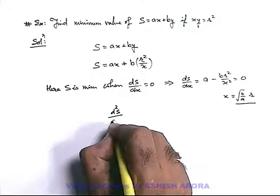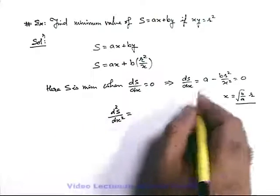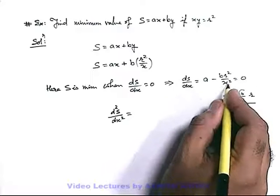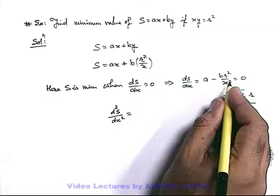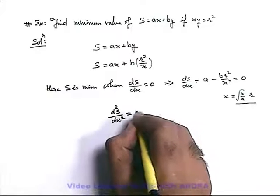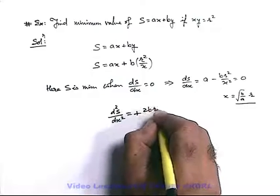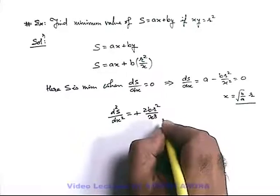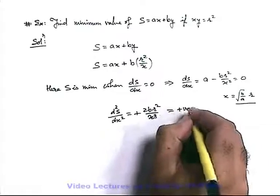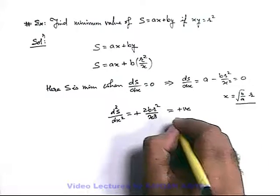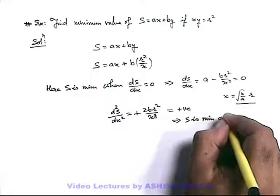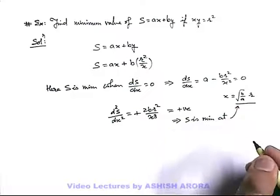The second derivative d²s by dx² is computed: the differentiation of a is zero, and 1 by x squared differentiates as minus 2 by x cubed, so this becomes plus 2br squared by x cubed. If we put the value of x, the result is positive. This implies s is minimum at this particular value.